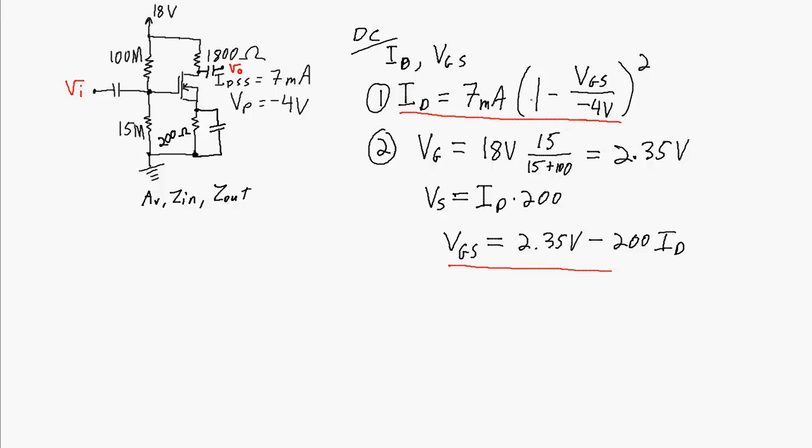So there's one equation relating VGS and ID, and the other equation relating VGS and ID. Just like with JFETs, I can solve this numerically, figure out what ID and VGS are with a computer program like MATLAB, or I can solve it graphically. Graphically is what I'm going to do right now - that will help highlight the difference between a depletion MOSFET and a JFET.